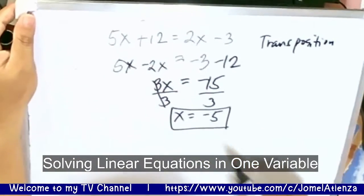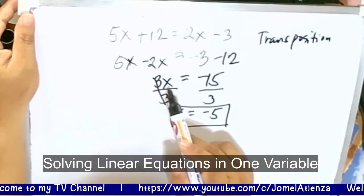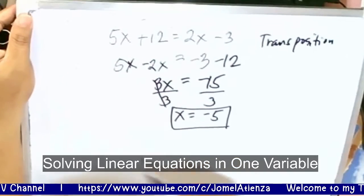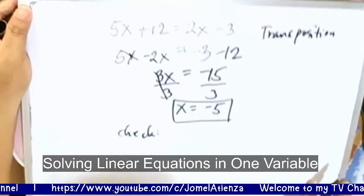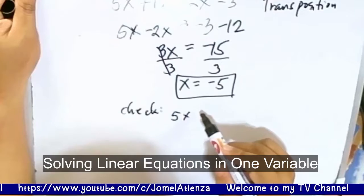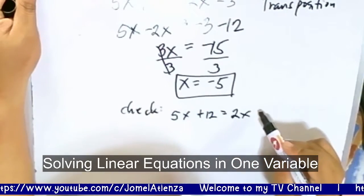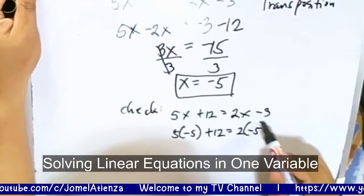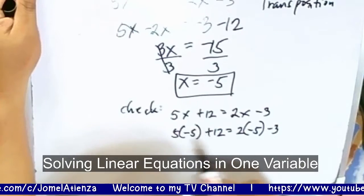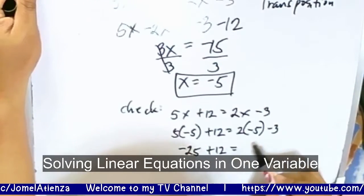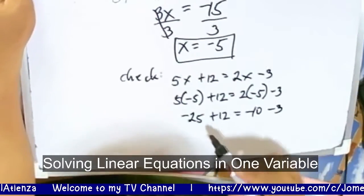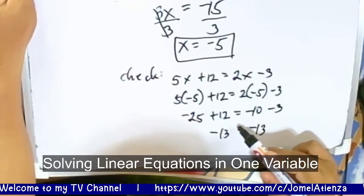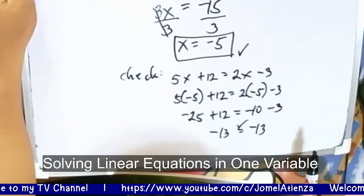Let us check if the solution set is correct. We have 5x plus 12 equals 2x minus 3. Substituting x equals negative 5: 5 times negative 5 plus 12 equals 2 times negative 5 minus 3. That gives us negative 25 plus 12 equals negative 10 minus 3. Negative 25 plus 12 is negative 13, and negative 10 minus 3 is also negative 13. Both sides are equal to negative 13, so the solution set is correct.